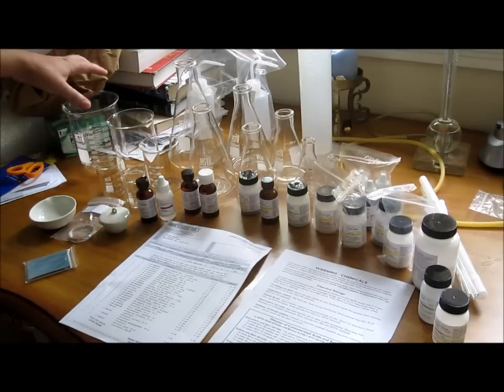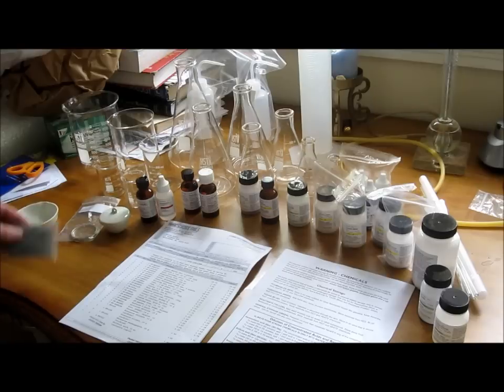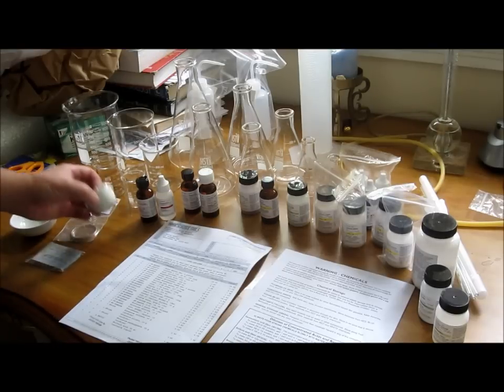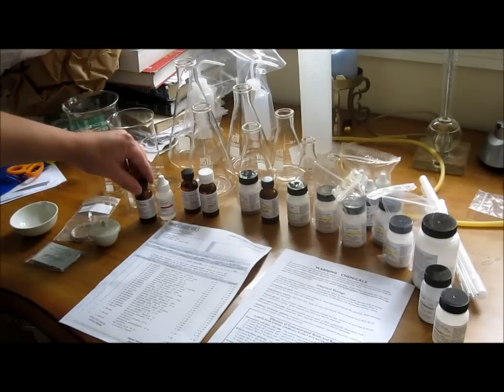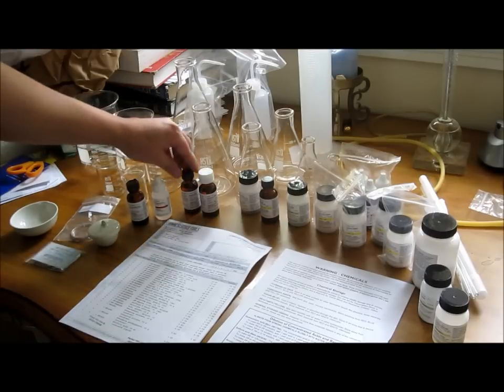So besides Erlenmeyer flask and beakers, I got an evaporating dish, some magnesium ribbon, pH paper 1-14, 80 strips, small crucible, some grams iodine stain, phenolphthalein solution for acid-base titration.